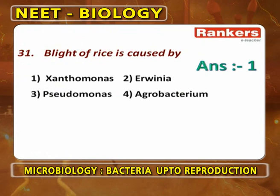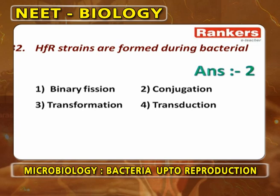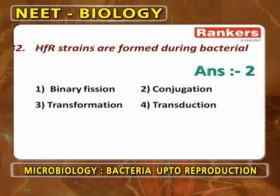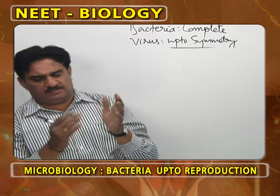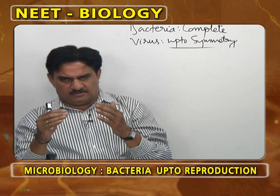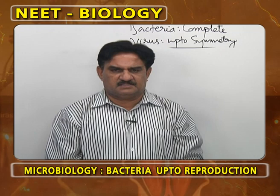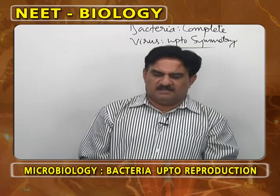HFR strains form during bacterial conjugation when the plasmid is incorporated into the DNA of the bacterial cell. During conjugation, two cells come close via a sex pili conjugation canal, and HFR strains undergo replication and enter the other cell either completely or partially, forming a partial zygote. Answer is conjugation.